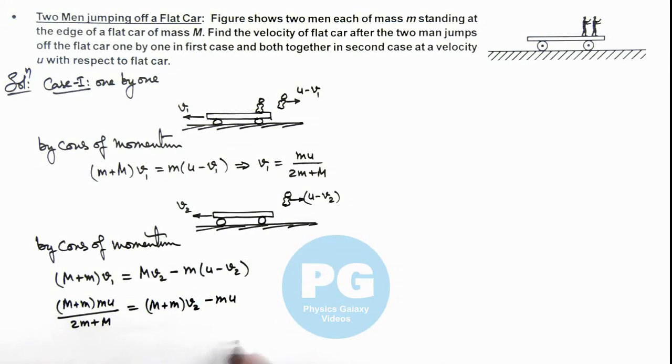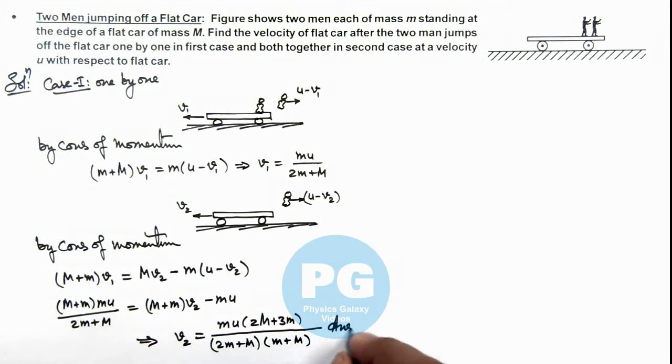On simplifying this relation, we can directly calculate the value of v2. You can simplify and verify. Here the final value we will be getting is mu multiplied by (2M + 3m) divided by (2m + M) multiplied by (m + M). This is the result which we will be getting for v2, and that will be the final result of this problem for Case 1.